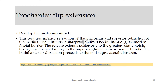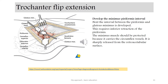This requires inferior retraction of the piriformis and superior retraction of the medius. The minimus is sharply mobilized beginning along its inferior fascial border. This release extends posterior to the greater sciatic notch, taking care to avoid injuring the superior gluteal neurovascular bundle. The initial anterior dissection proceeds to meet the supraacetabular area. Develop the minimus and piriformis interval — this is very important.